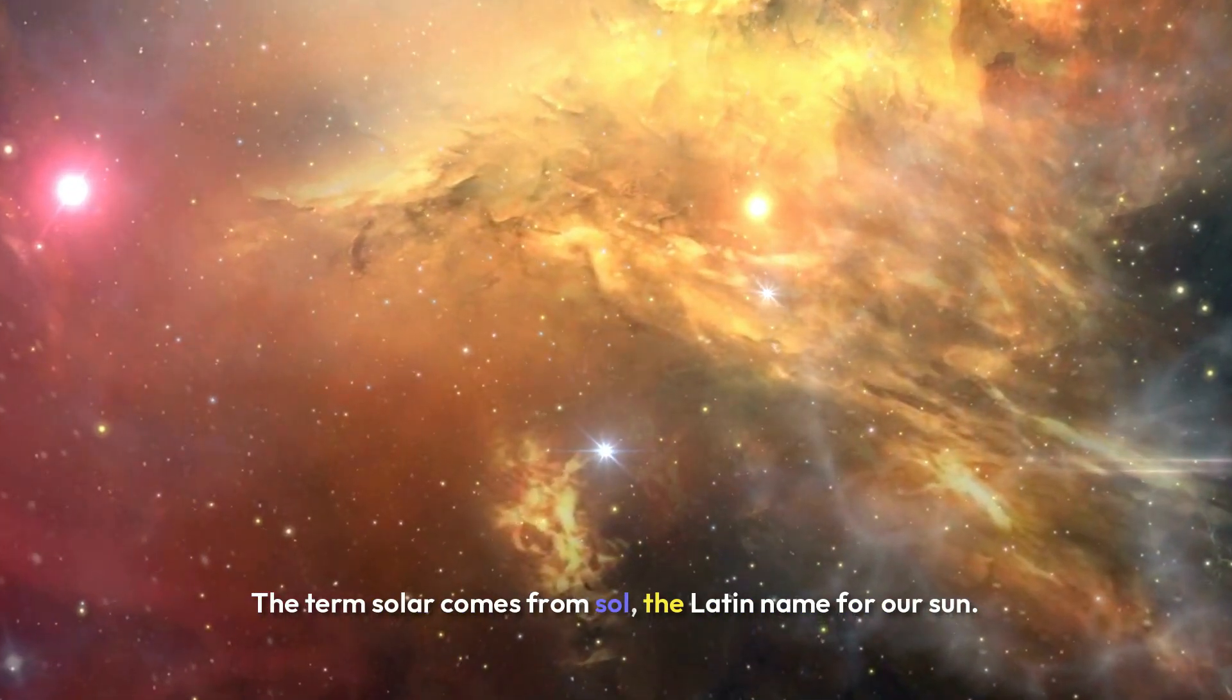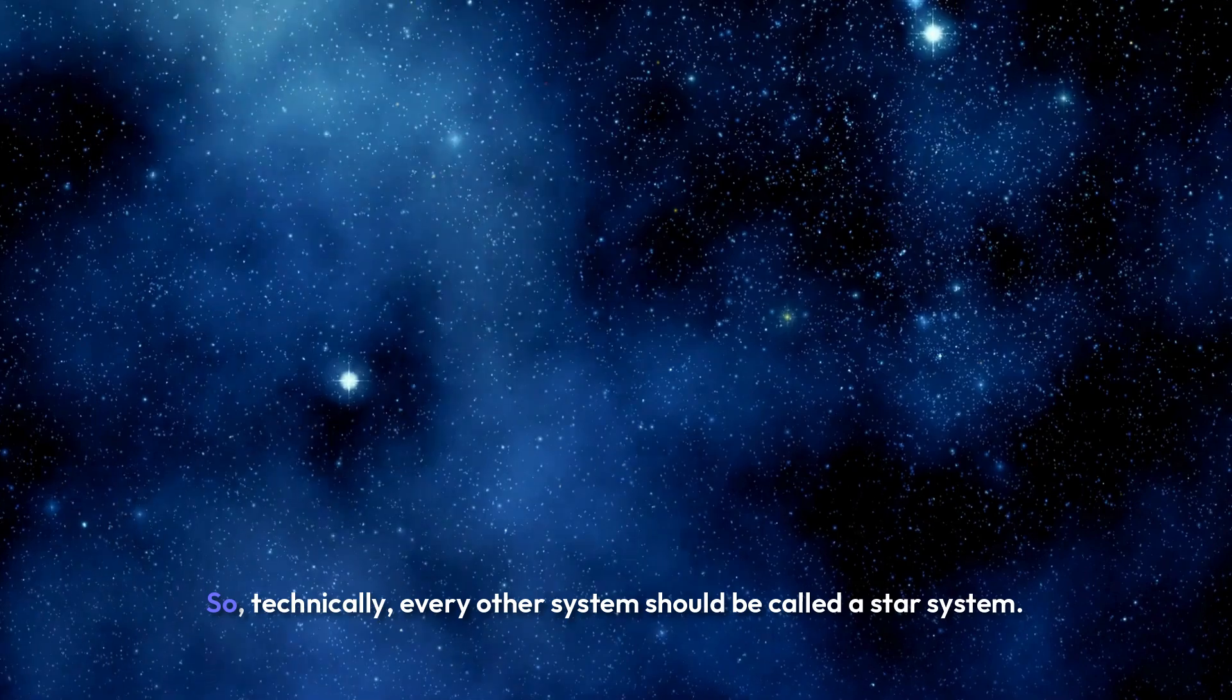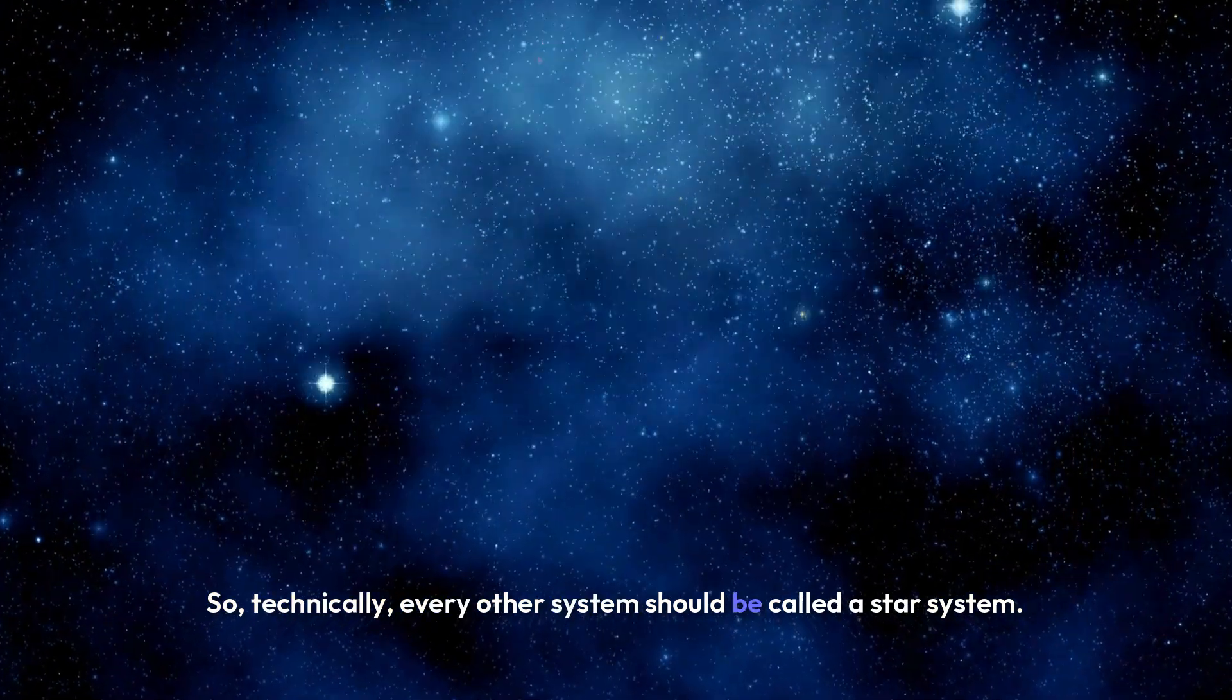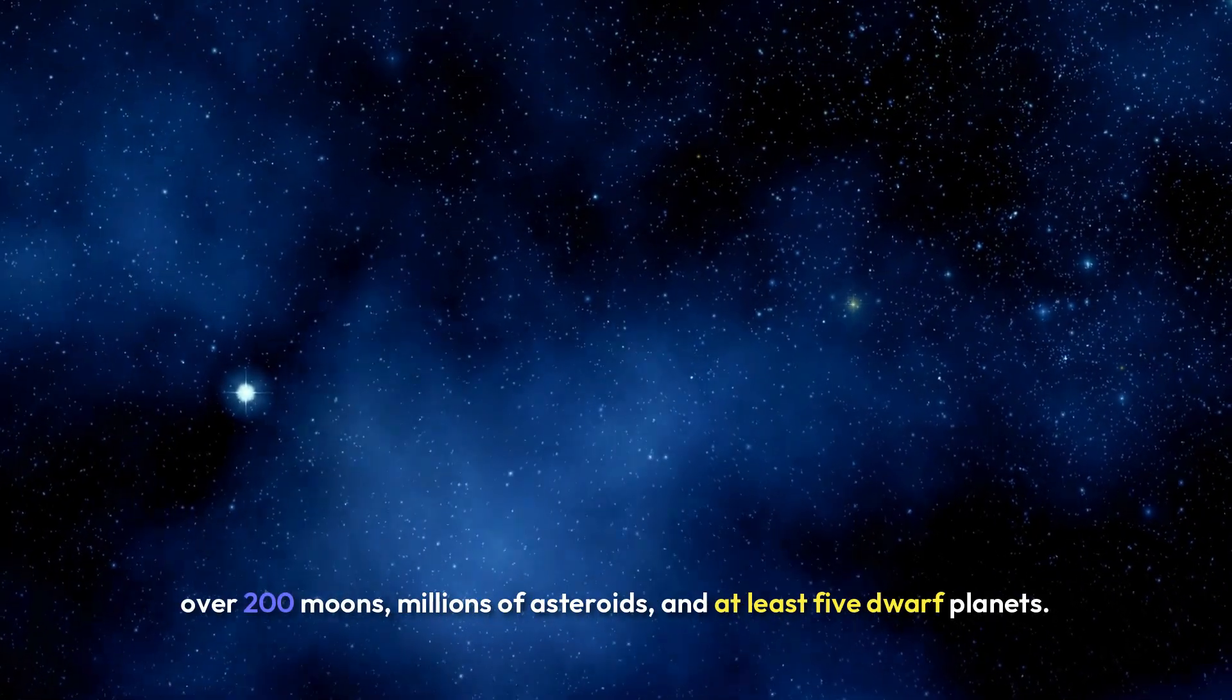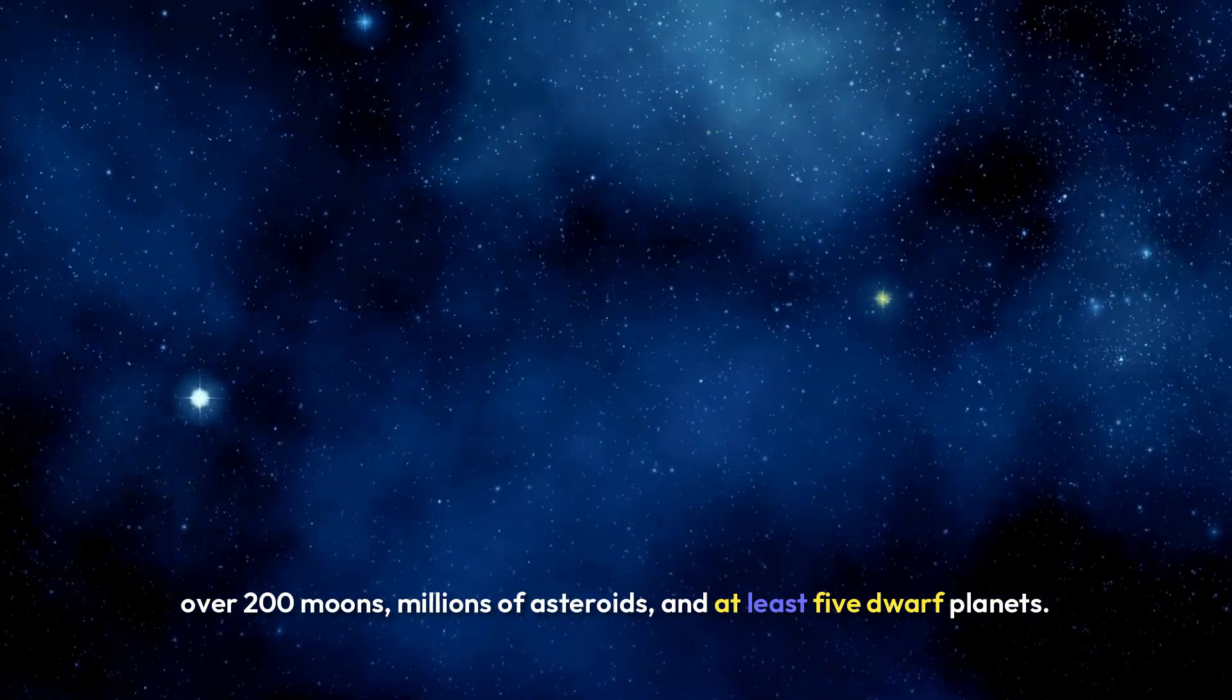The term solar comes from Sol, the Latin name for our sun. So technically, every other system should be called a star system. But the meaning stuck. In our case, the sun is orbited by eight planets, over 200 moons, millions of asteroids, and at least five dwarf planets.